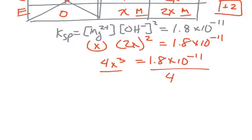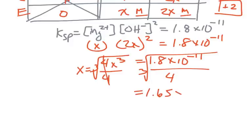And so this is going to be 4X cubed equals 1.8 times 10 to the negative 11. Divide both sides by 4. And I want X, not X cubed, so I need the cube root of this answer. And when all that is said and done, we get 1.65 times 10 to the negative 4. So that is the solubility, that's the concentration I can get for this reaction.